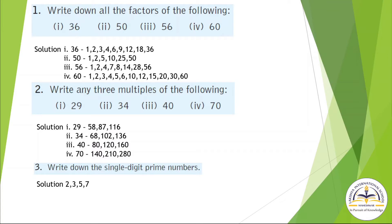Question Number 2: Write any 3 multiples of the following. For 29, you can multiply with 2, 3, 4, and you will easily get 3 multiples. 29 × 2 = 58, 29 × 3 = 87, 29 × 4 = 116. These are the multiples of the number. In the same manner, you have to solve this question.